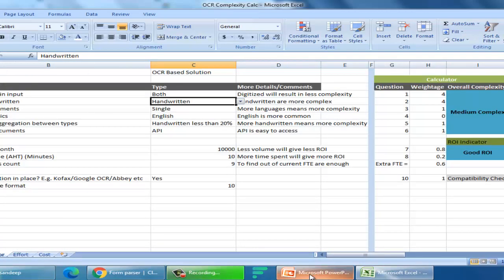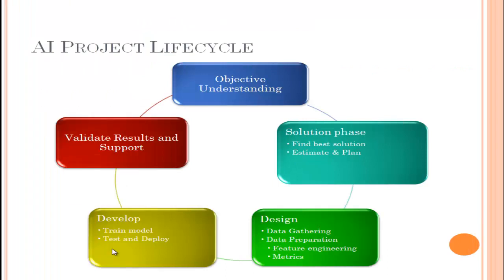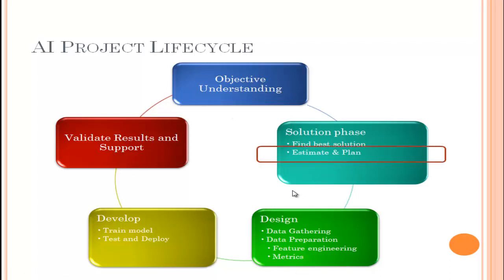Let's talk about a typical AI project lifecycle. First, you understand the customer problem; then you find the best solution, do the estimation and planning, and get into proper development. You gather data, do data preparation like feature engineering, decide the right accuracy metric, train your model, test it, tune it, and deploy it. In production you validate the results, support it over time, and if anything is wrong you go back, fine-tune your results, and repeat the cycle. Today's objective is to focus on the estimation and planning area, which generally goes untouched by other videos.